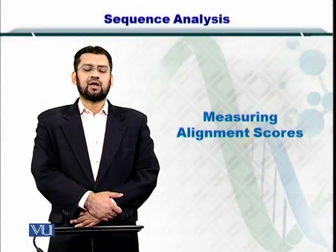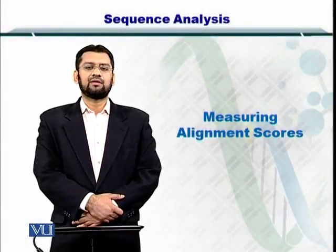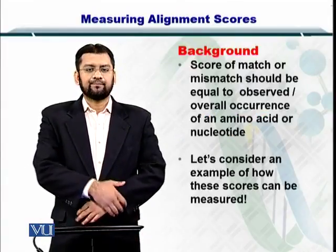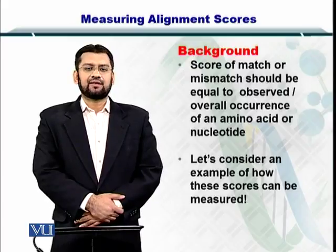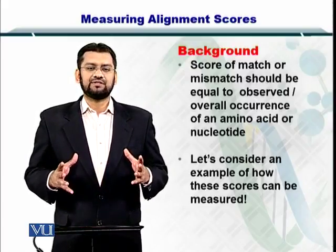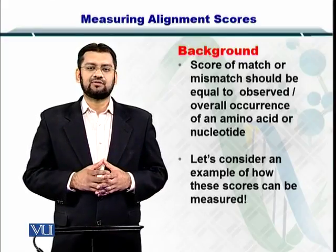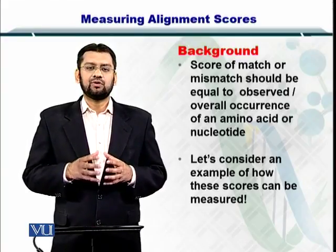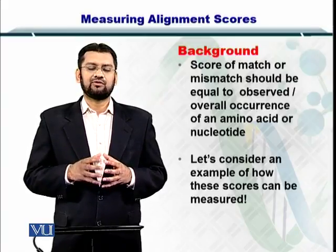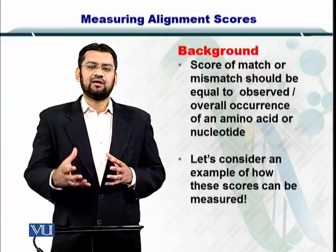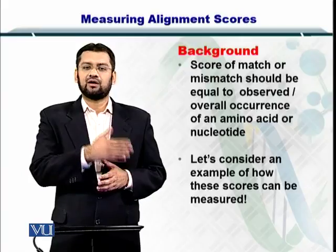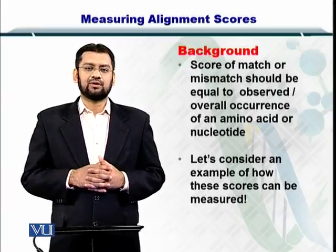We will now look at how we can measure the alignment scores. You already understand the fact that the scores cannot be uniform for all matches, mismatches, and gap penalties. We need to appreciate the fact that several nucleotides and amino acids are more easily replaced by others, while some others are not that easily replaced or substituted.